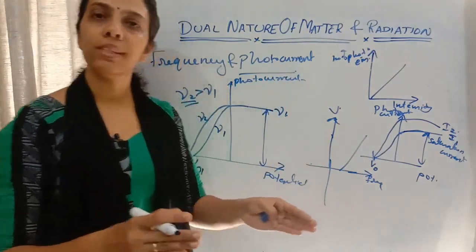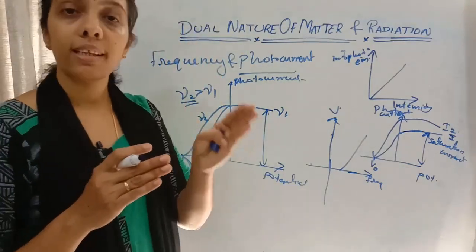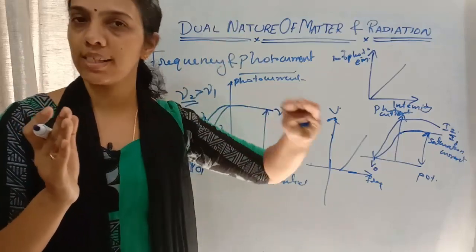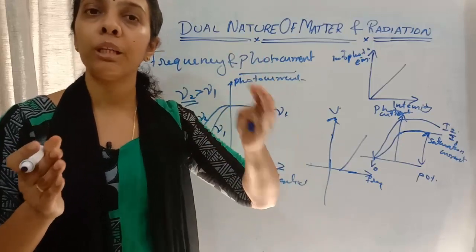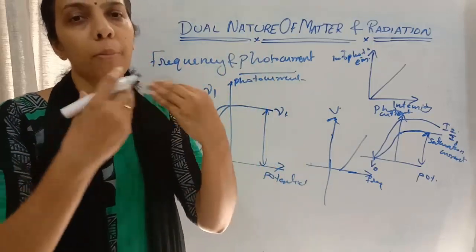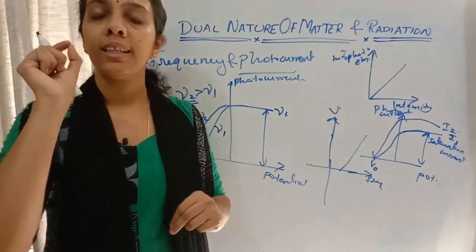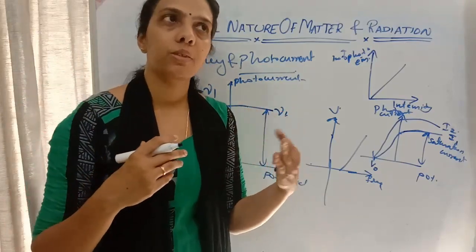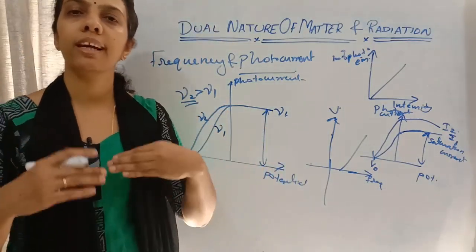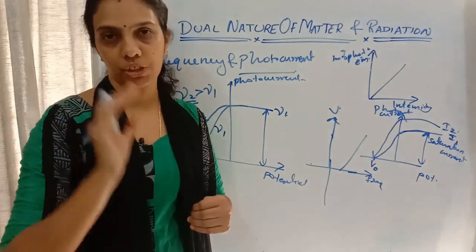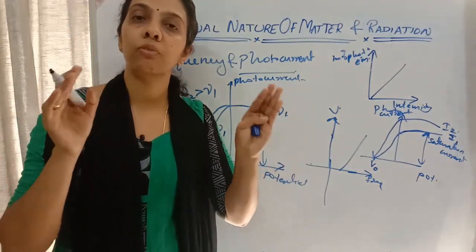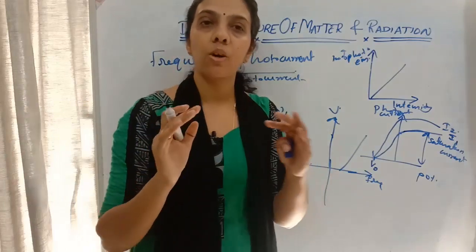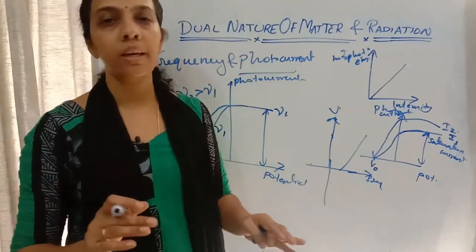The minimum frequency required for the electron to come out from the metal surface is called threshold frequency. The minimum energy required for the electron to come out from the metal surface is called work function — that is, how much minimum energy is required to take out the electron from the metal surface.